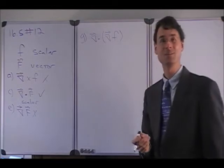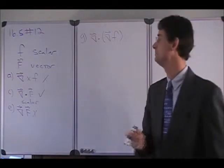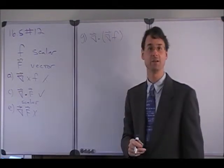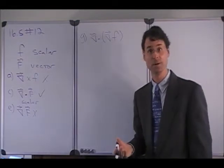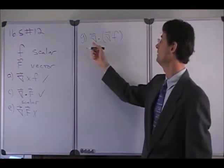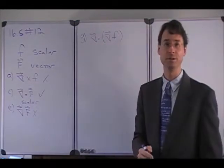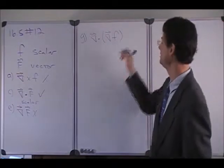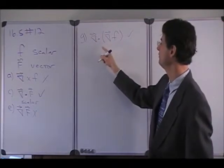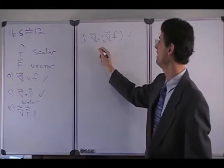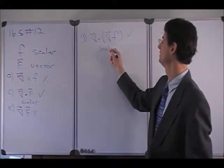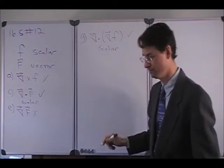As we move along to letter G, it asks us to take the divergence — del dot — of the gradient of the scalar field, lowercase f. Can we take the gradient of a scalar? Yes, we can, and what do we get? We get a vector. Now can we take the divergence of a vector field? Yes, we can. And when you take the divergence of a vector field, because it's a dot product, we get a scalar.